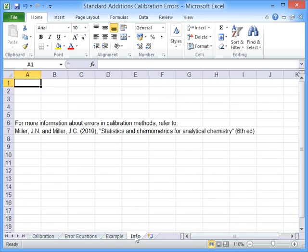If you'd like to find out a bit more about errors in calibration methods, then you can refer to Miller & Miller Statistics and Chemometrics for Analytical Chemistry.